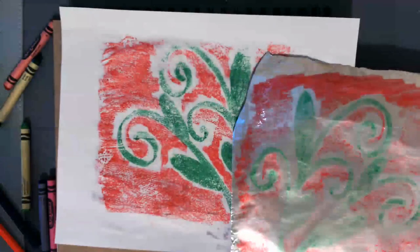When you lift it off, it transfers the marker from the foil onto your paper. So it makes one print, a monoprint.